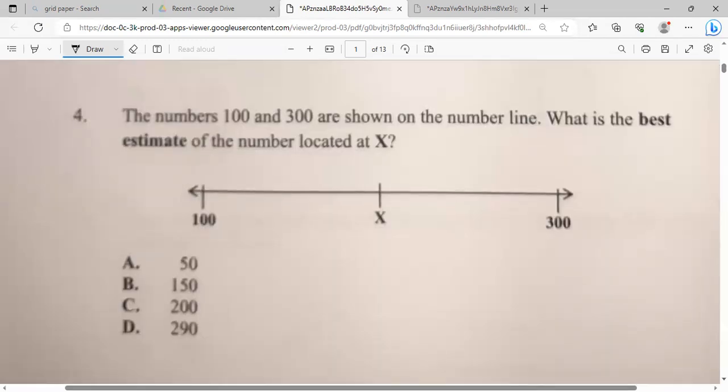The number one hundred and three hundred are shown on the number line. What is the best estimate of the number located at X? Based on this, you can see that it's halfway. Now halfway between a hundred and two hundred would be 200. So I'm going to go with 200 for this one. Couldn't be 50 because 50 would be about here. It's between 150 and 200, so that would be 200.